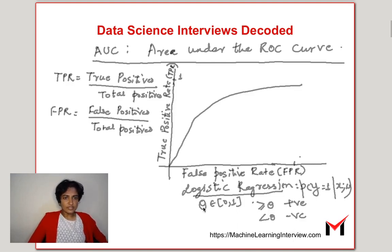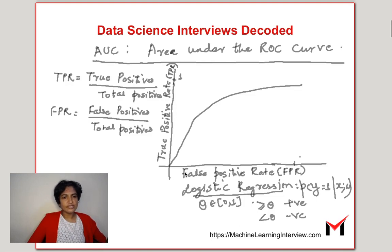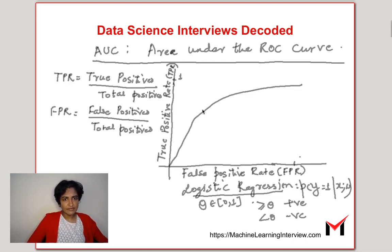For each value of theta we choose, we get a different true positive rate and a different false positive rate — a pair of TPR and FPR. For example, if I choose theta equals 0.3, I might get one specific value of TPR and FPR, which constitutes one point.